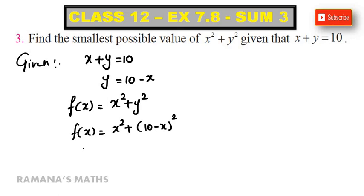Now, expand the value. f dash of x is equal to 2x. The derivative of 10 minus x gives minus 1. So f dash of x is equal to 2x plus...